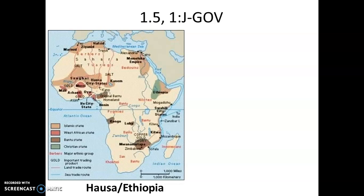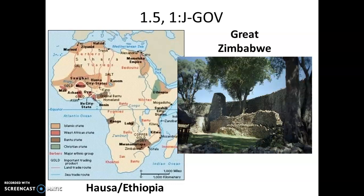Transitioning to Africa, the map shows the Hausa city-states and their trade, the Ethiopian kingdom — one of the first Christian kingdoms in Africa — and Great Zimbabwe, or Stone House, located in the southern portion of Africa. The ruins are still accessible today. When you see bolded words, some may be illustrative examples while others come directly from the historical developments themselves.